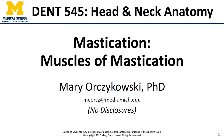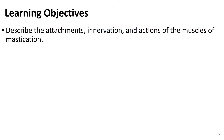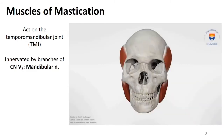Hi all, this is Dr. O, and in this video we're going to talk about the muscles of mastication. We're going to specifically get into their attachments, innervation, and all of the actions of these muscles. All of them act on the temporomandibular joint and they're innervated by branches of V3. Most of trigeminal is a sensory nerve, but V3 contains a motor root, and one group of muscles innervated by V3 is these muscles of mastication.